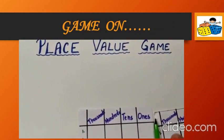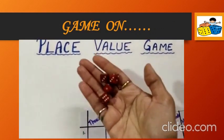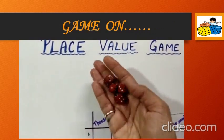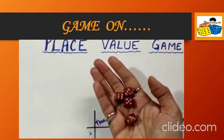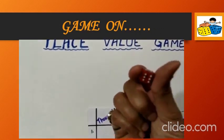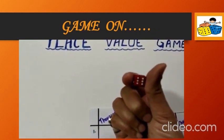Now, come into our game. See, I have taken four dice. If you are not having four dice, no problem. What you can do is take one dice and roll it four times.